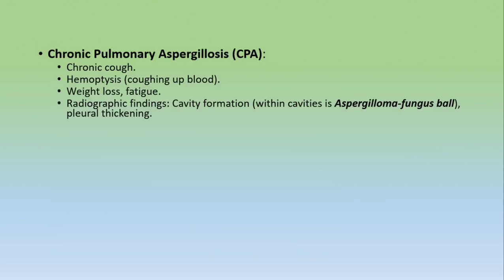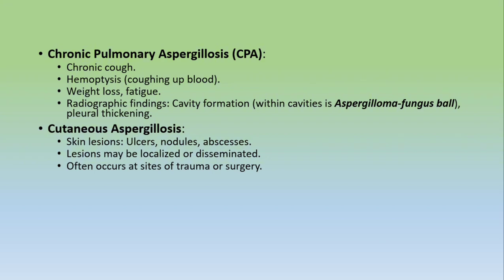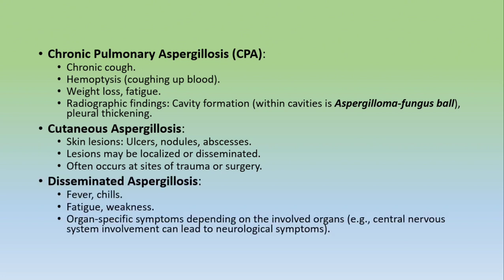Fourth disease: Chronic Pulmonary Aspergillosis (CPA) — symptoms include chronic cough, hemoptysis, weight loss, and fatigue. Radiographic findings show cavity formation, and within cavities, aspergilloma (fungus ball-like structure) and pleural thickening. Fifth disease: Cutaneous Aspergillosis — involves skin lesions, ulceration, nodules, and abscess formation. Lesions may be localized or disseminated and often occur at sites of trauma or surgery. Sixth disease: Disseminated Aspergillosis — symptoms include fever, chills, fatigue, weakness, and organ involvement including CNS, which can lead to neurological symptoms.